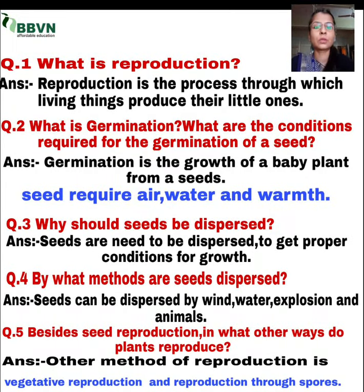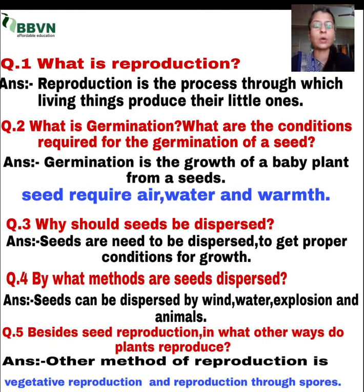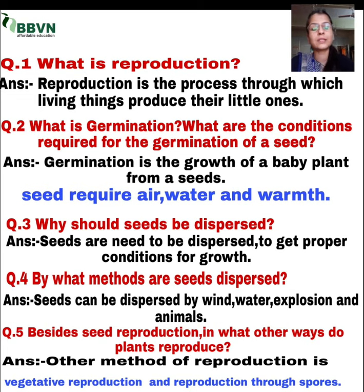Ek seed hota hai, aapne usse ko zemine mein laga diya. Ab usme se baby plant jo hota hai, woh kis tarike se bahar nikalta hai, aur bahar nikalke woh ek big plant, big tree mein change hota hai. Toh yeh hota hai germination — ek jo baby plant hai, jo seed mein se nikal raha hai, woh kaise dhire dhire bada tree ya plant banta hai. Usse hum kehte hain germination.